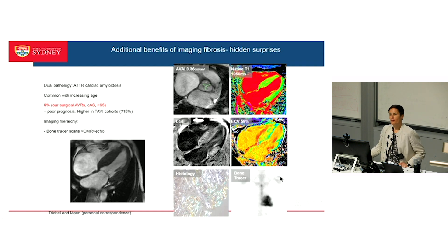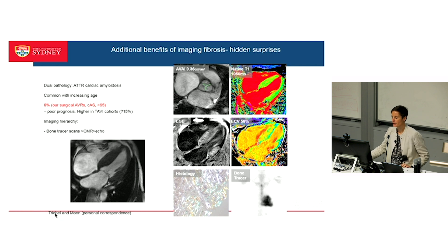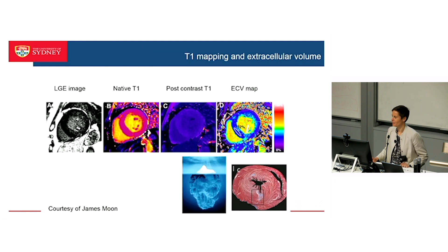What are the additional benefits of imaging fibrosis? Using T1 mapping, we actually see the elevated native T1 score that is very classic of amyloid. And in fact in Tom and James' study — this is unpublished data, though they've presented it at a number of places — they demonstrated 6% of their surgical AVRs actually having amyloid. And obviously that is something to take into consideration in these patients.